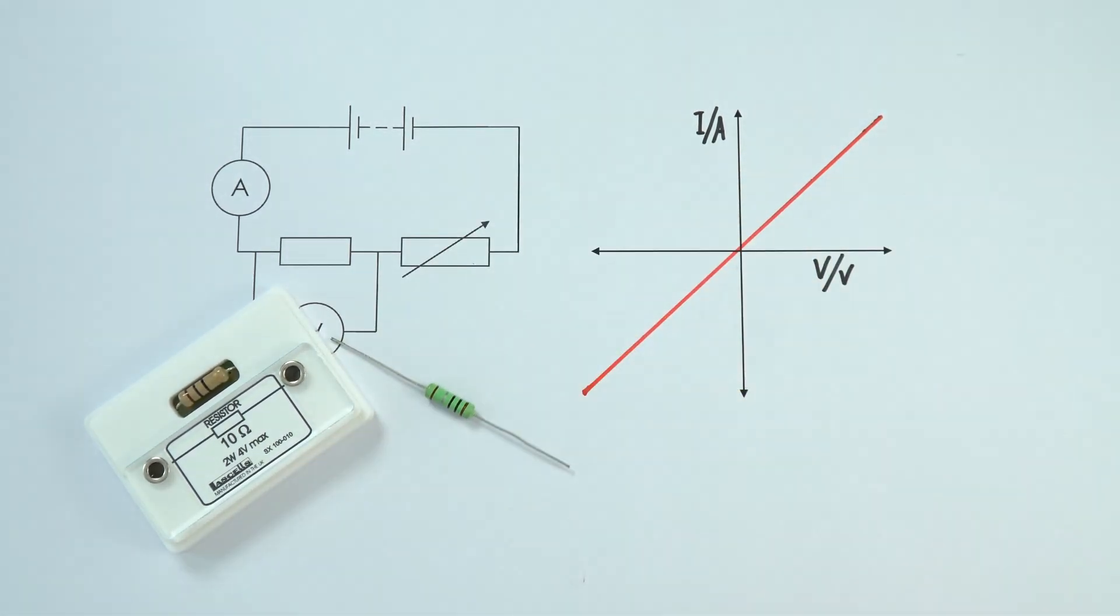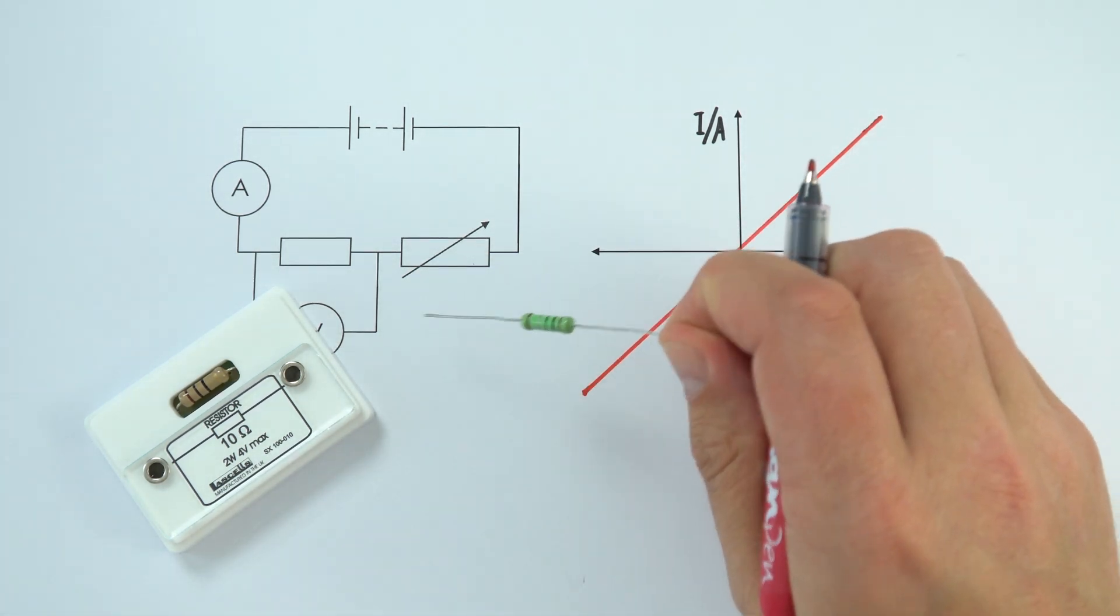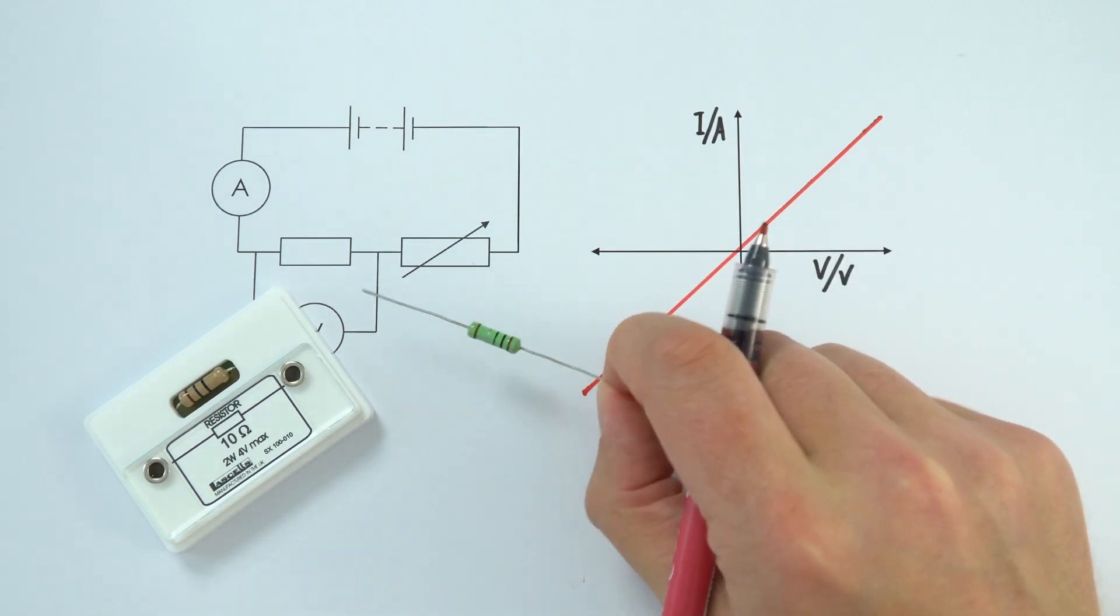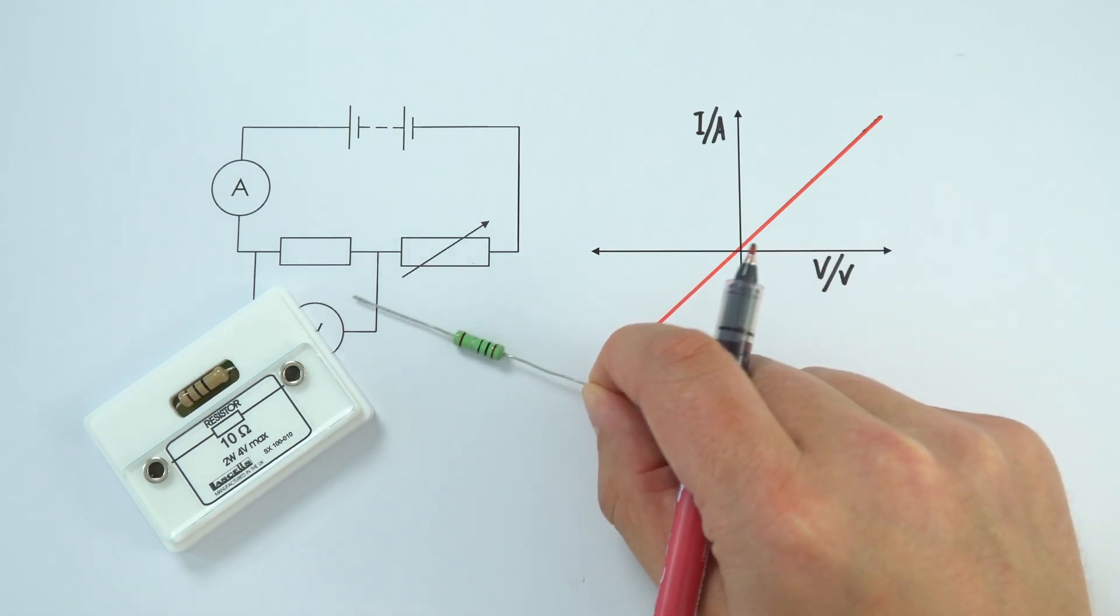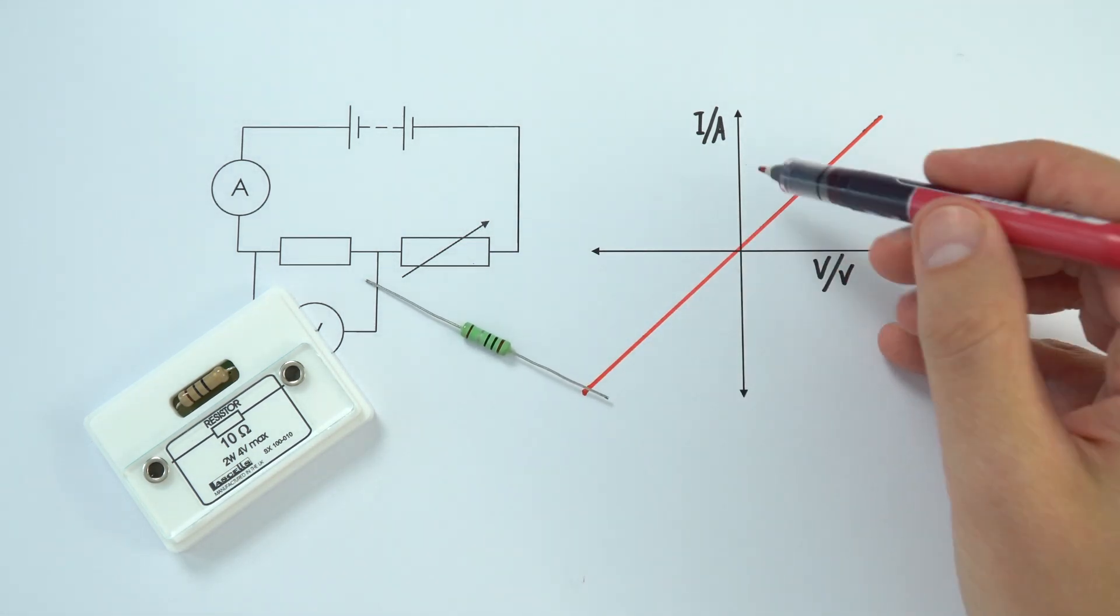This shows that if you've got a resistor, its resistance stays constant provided its temperature remains constant. It's behaving like what we call an ohmic conductor. An ohmic conductor, provided it stays at the same temperature, has potential difference directly proportional to current.